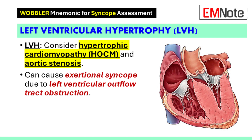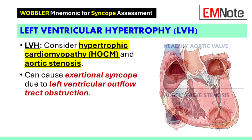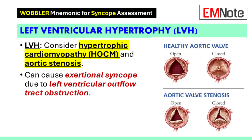Left ventricular hypertrophy is another important consideration when evaluating an electrocardiogram. Conditions such as hypertrophic cardiomyopathy and aortic stenosis should be considered if left ventricular hypertrophy is noted. These conditions can lead to exertional syncope due to left ventricular outflow tract obstruction.